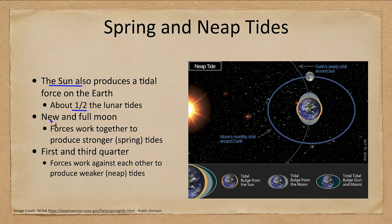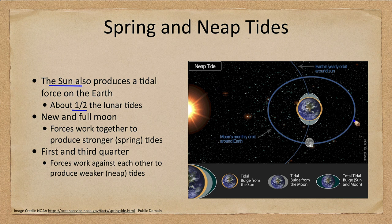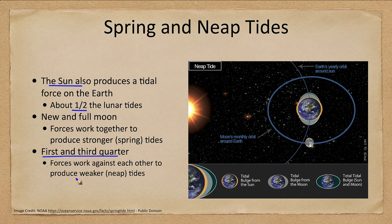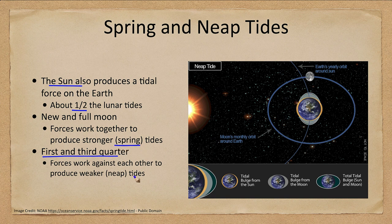During new and full moon we get spring tides — the solar and lunar tides add together, giving us a much stronger tide, a much higher high tide and a much lower low tide than we would otherwise see. At first and third quarter moon the forces work against each other — the moon is pulling tides in one direction and the sun in the other — and we get lower tides. The stronger tides at new and full moon are called spring tides, and the weaker tides at first and third quarter moon are called neap tides.